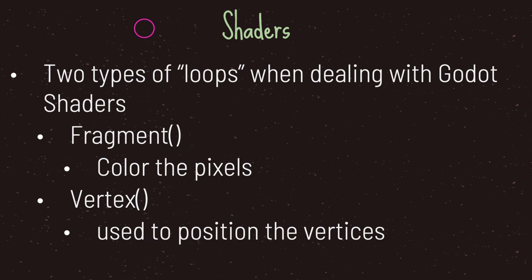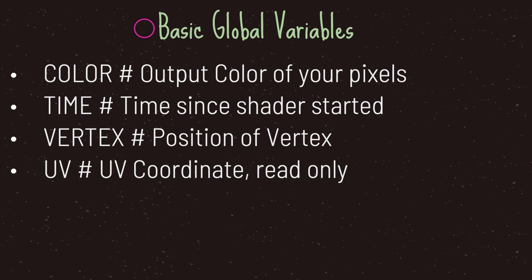I want to introduce four different global variables that shaders come with. The first is color, which is the output color of your pixels. The second is time, the time since the shader started — not to be confused with delta time. The third is vertex, the position of your vertex. The fourth is UV, your UV coordinate, which is read-only.